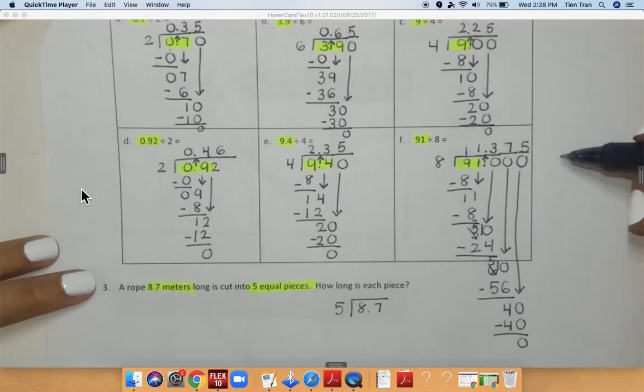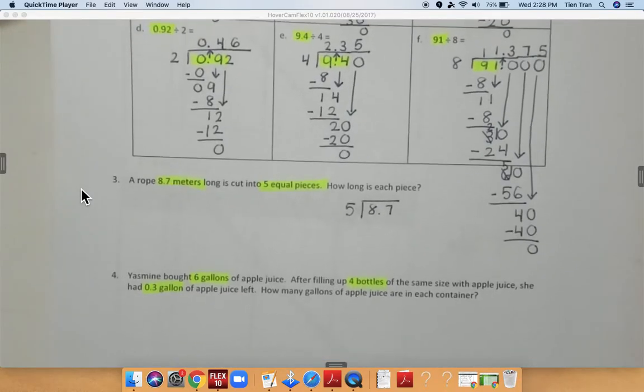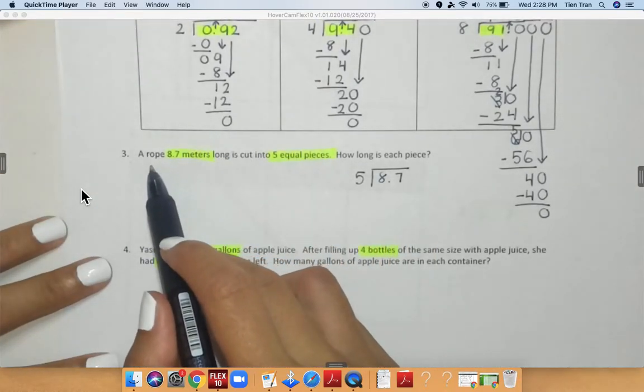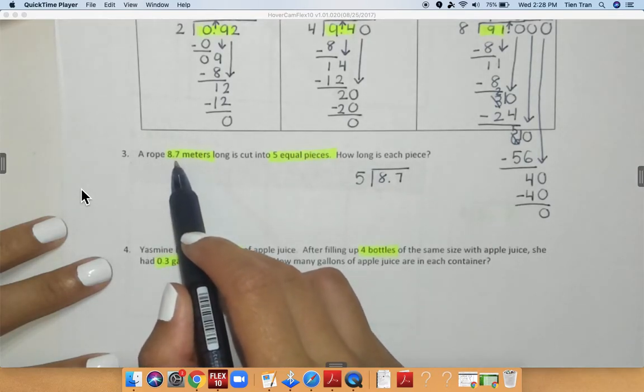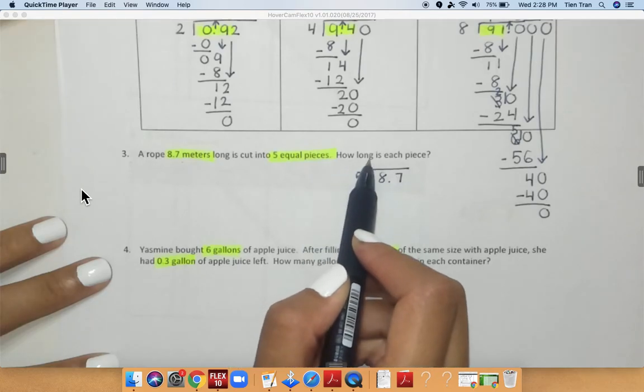and 375,000. Wow, that's a big number, right? Okay, now I'm going to move down to problem number three. Problem number three says a rope 8.7 meters long is cut into five equal pieces. How long is each piece?